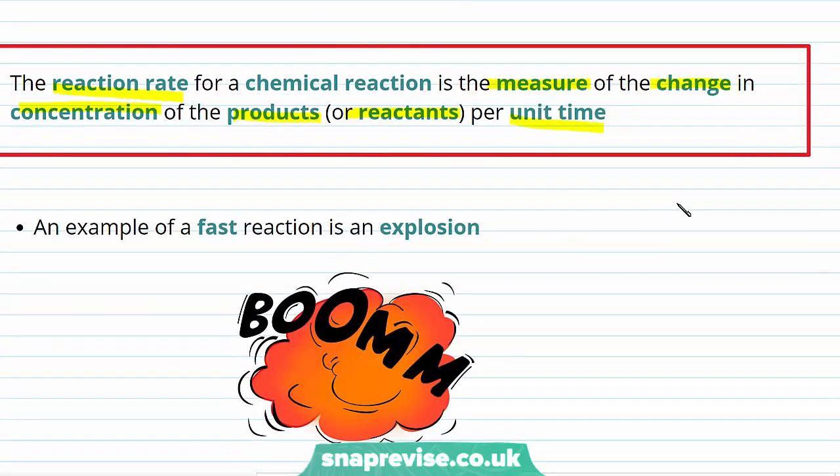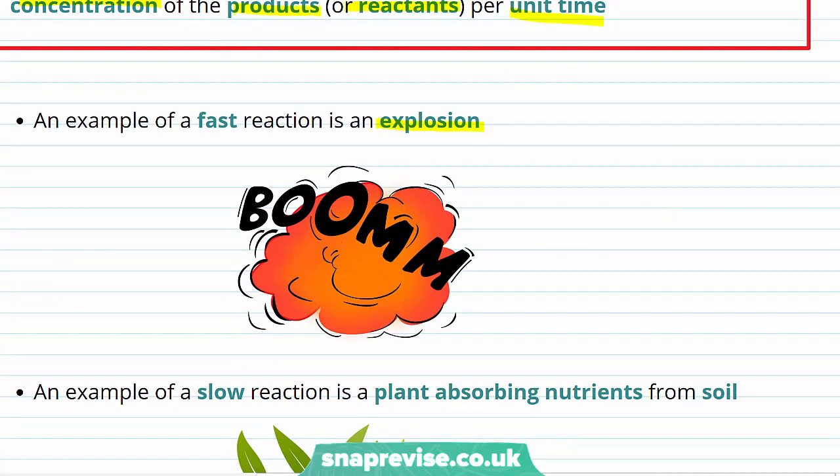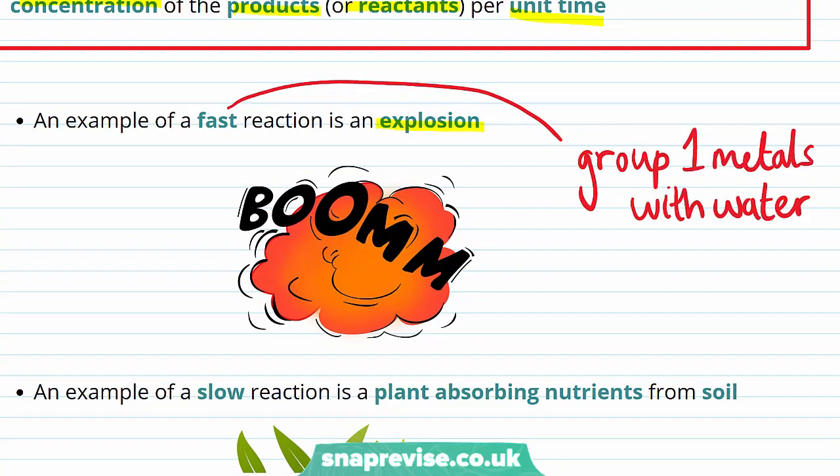An example of a fast reaction is any explosion, as well as the reactions of the group 1 metals with water. As soon as potassium is added to water, it will burst into a characteristic purple flame as the potassium burns.